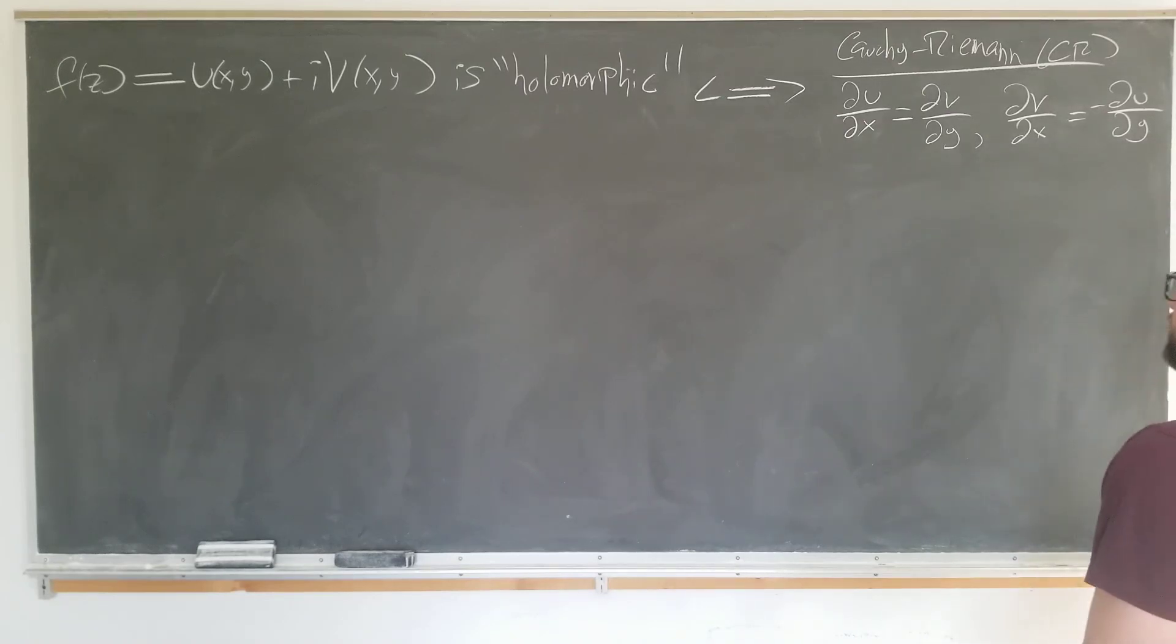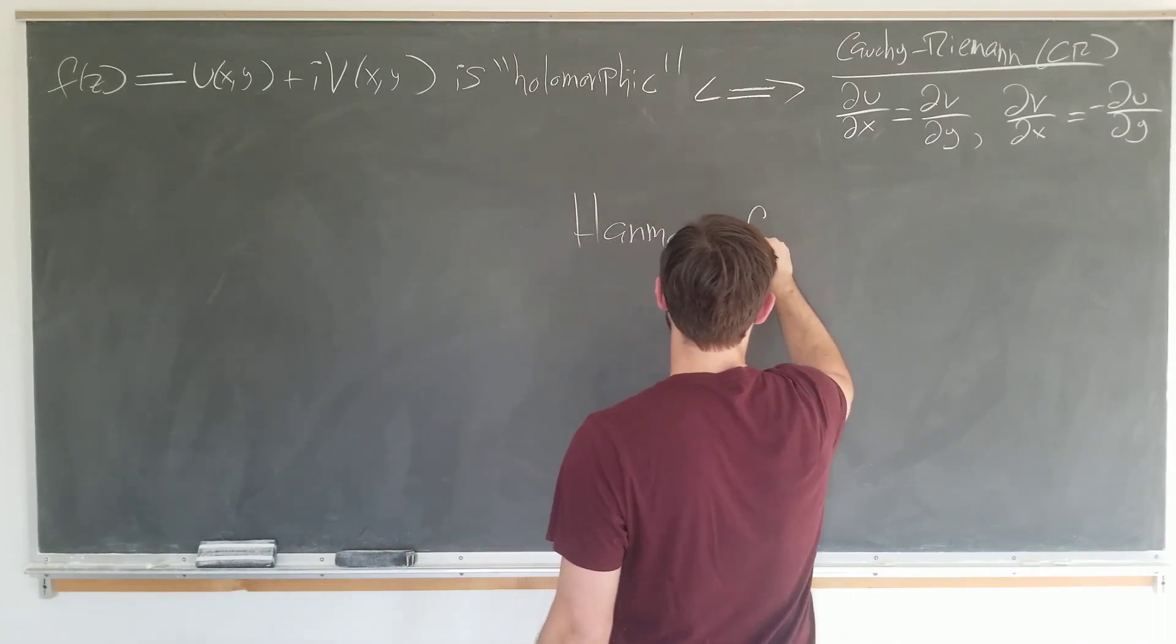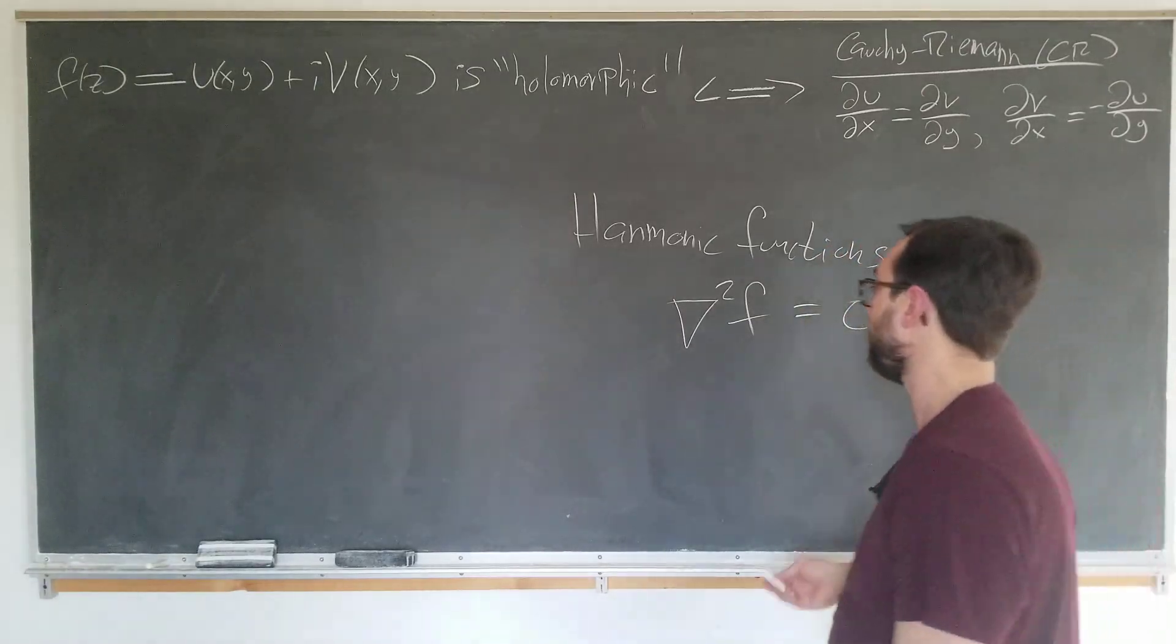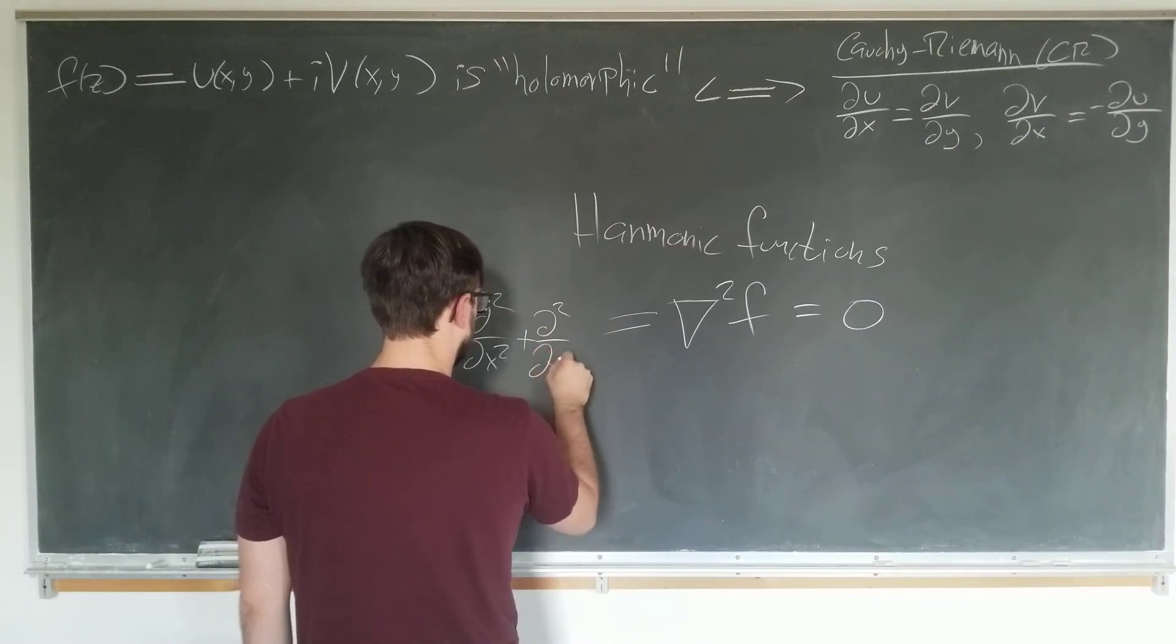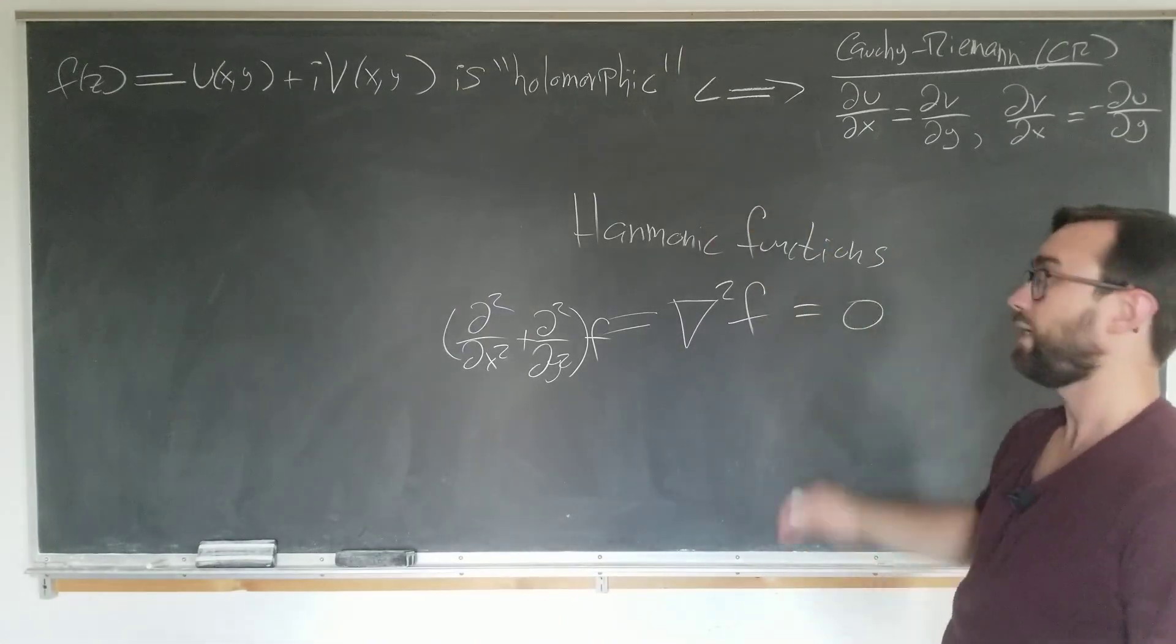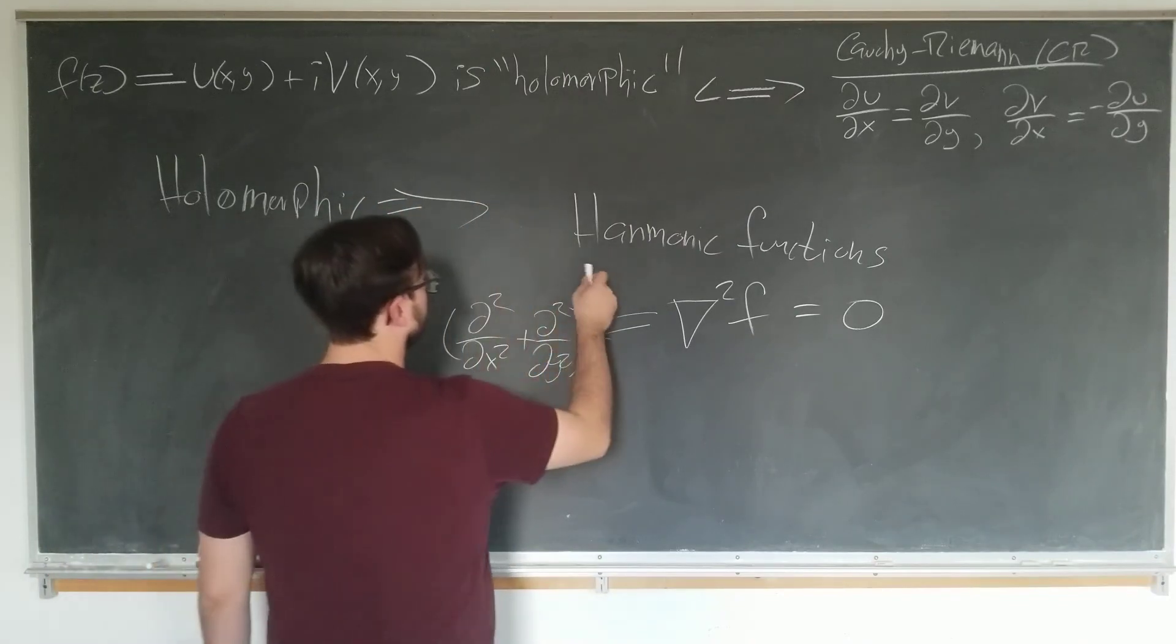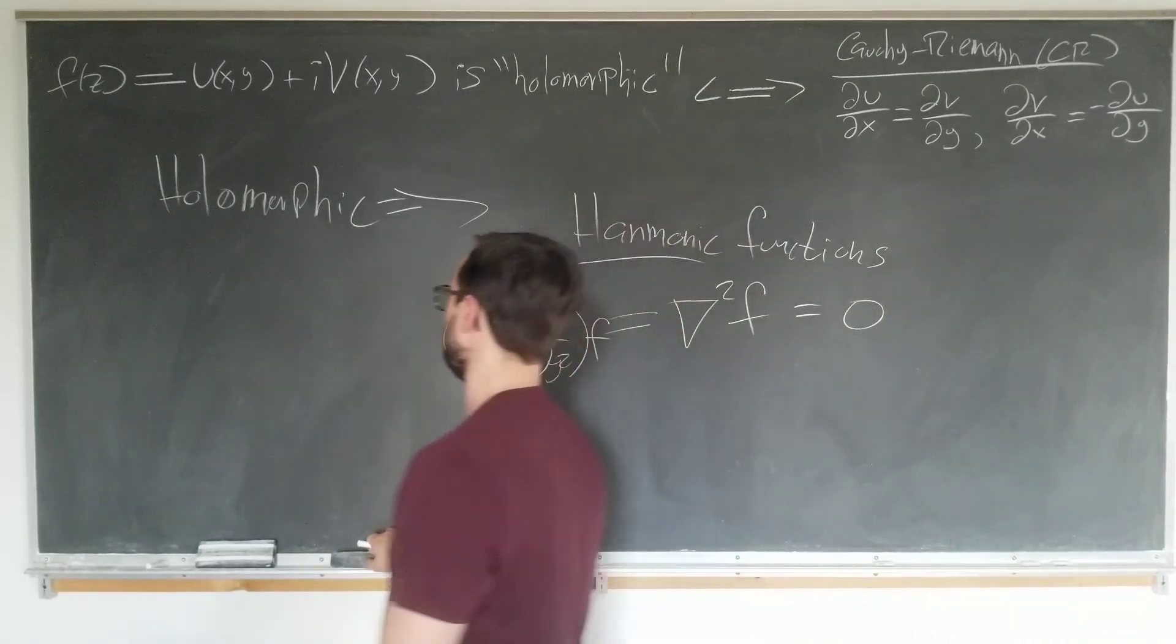We are going to be working on the connection between the holomorphic and the harmonic functions. These satisfy Laplace's equation, or the Laplacian of f is equal to zero, where the differential operator here in two dimensions is just the x-derivative squared plus the y-derivative squared. We are actually going to show that if a function is holomorphic, it has to be harmonic as well. So we want to show that holomorphic actually implies harmonic. And we are going to do this in two ways, one of which is commonly seen in the textbooks, and one of which is not. So let's get started.